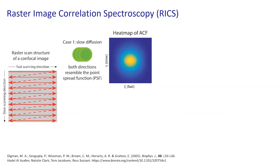For a very slow or immobile molecule, if I image it in pixel one, because the molecule shows up in a five-by-five pixel grid I'll see it in pixels two, three, four, and five before the intensity drops off. The correlation of something above average will look like the point spread function. In the fast scanning direction, seeing a molecule in one pixel means I continue seeing it for several pixels. Since it's immobile, by the time I get back down to the next line I'll see it again, until I'm outside the point spread function.